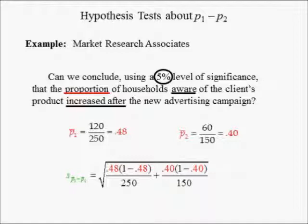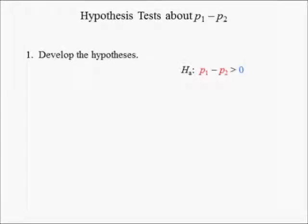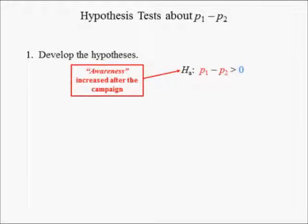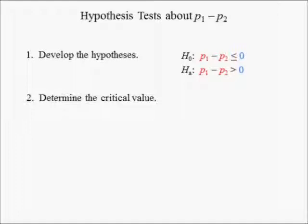Hence, the standard error of this test is computed the same as it was in the confidence interval example. The standard error of the difference in proportions is 0.0510. Since we have been asked to determine if the ad campaign has increased the proportion of households aware of the client's product using a 5% level of significance, the alternative hypothesis is that the difference in the population proportions is positive. Thus, the null hypothesis is that the difference in the population proportions is less than or equal to 0.